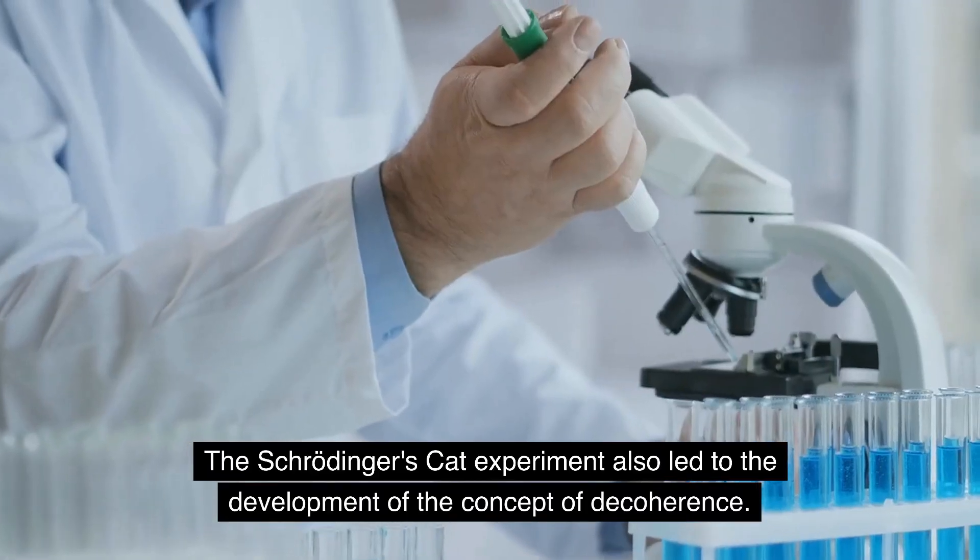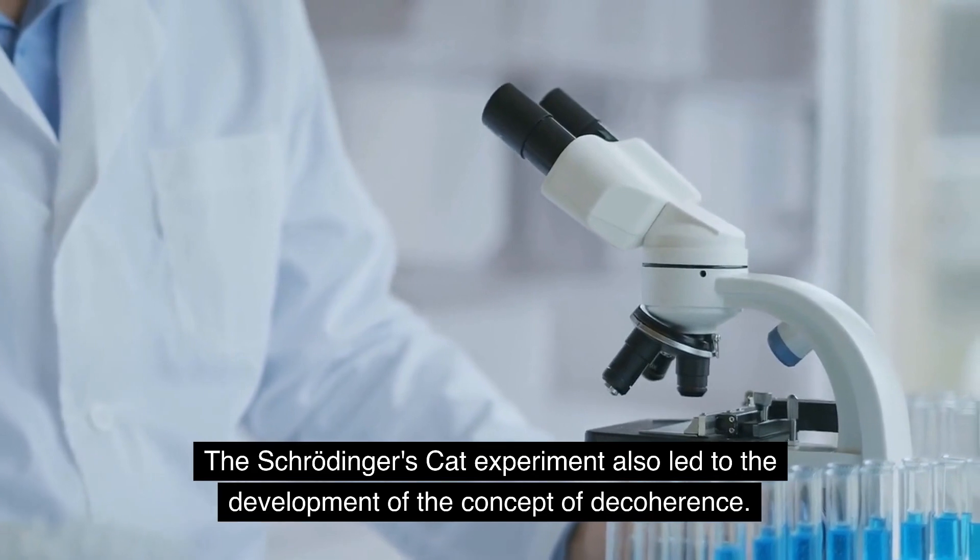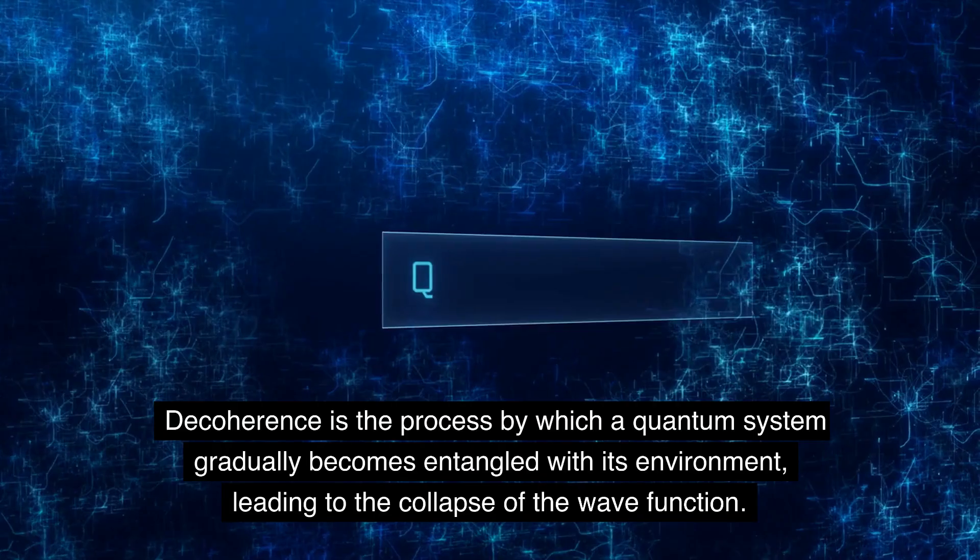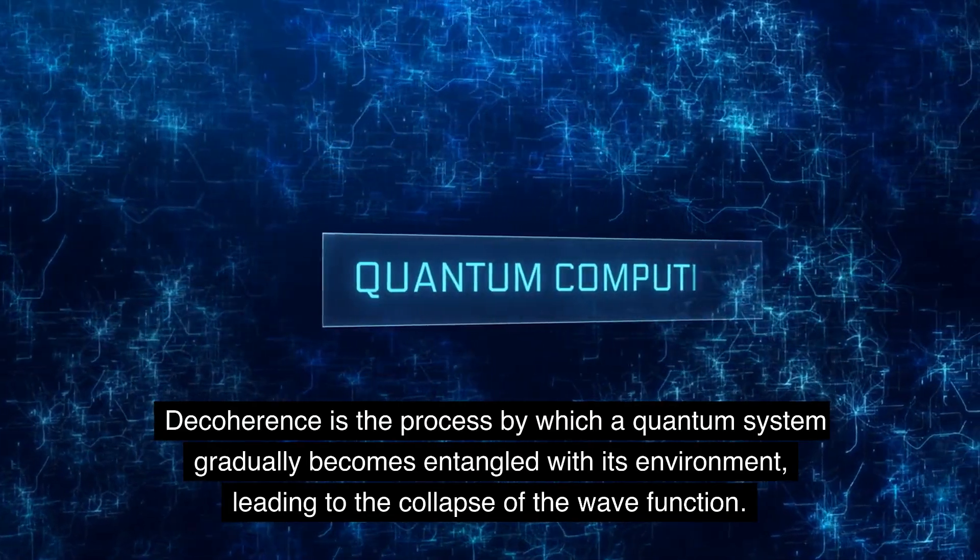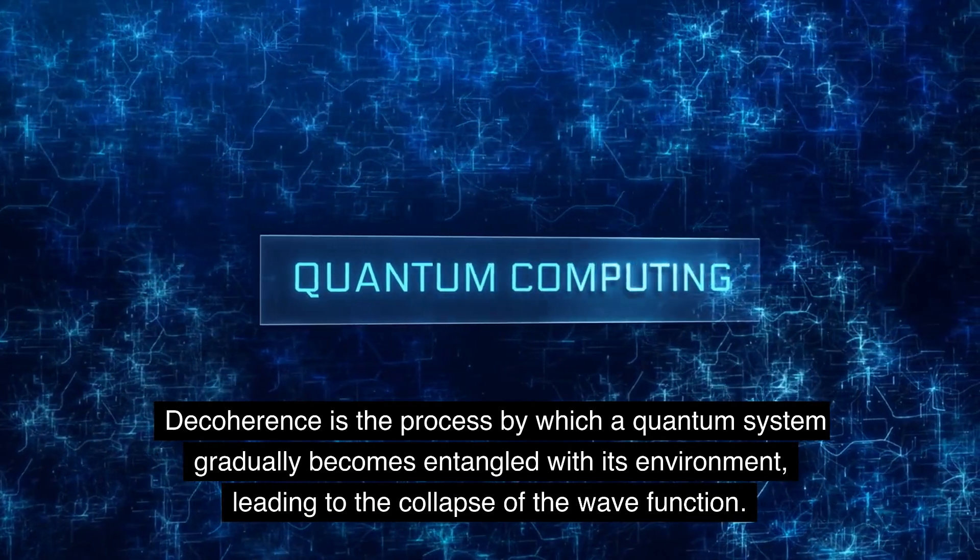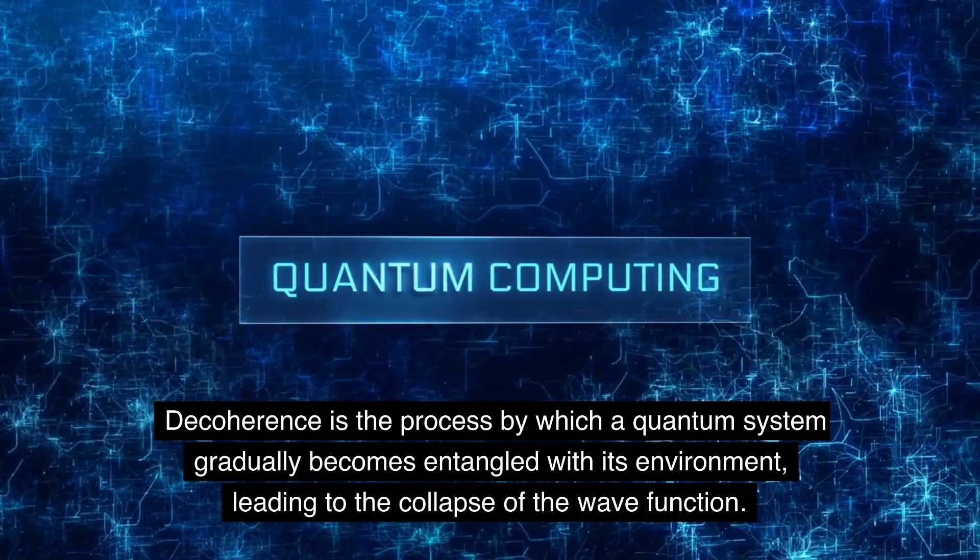The Schrödinger's CAT experiment also led to the development of the concept of decoherence. Decoherence is the process by which a quantum system gradually becomes entangled with its environment, leading to the collapse of the wave function.